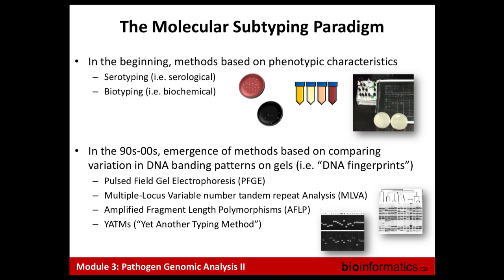Molecular typing grew out of historical methods like serotyping and biotyping, which of course still continue, but they offer limited resolution compared to molecular subtyping. In the nineties and early two-thousands there was a proliferation of molecular typing methods — PFGE, MLVA, and similar variations. They were all linked by the fact that they looked at banding patterns on gels and required a lot of human oversight to run and interpret.